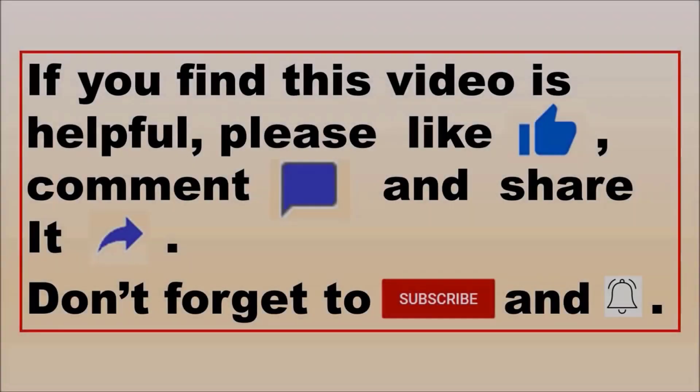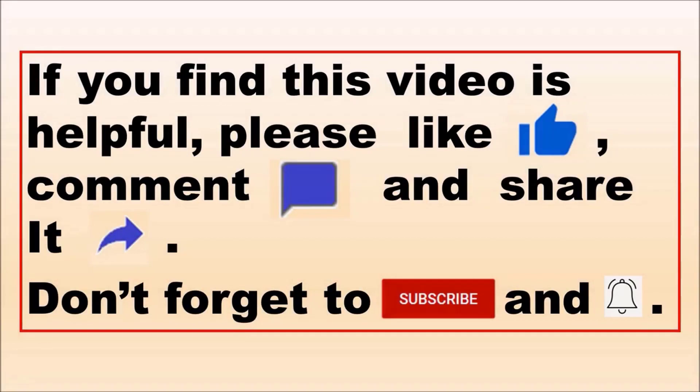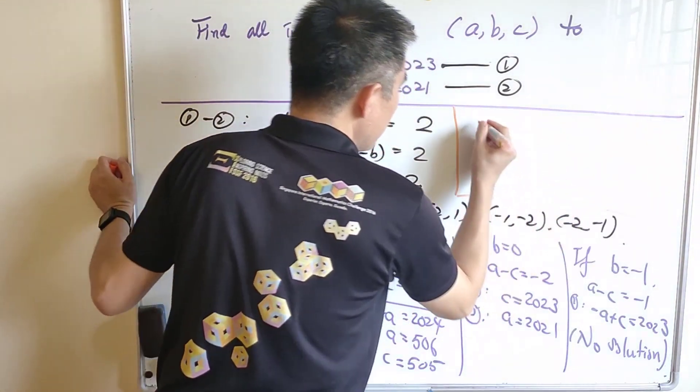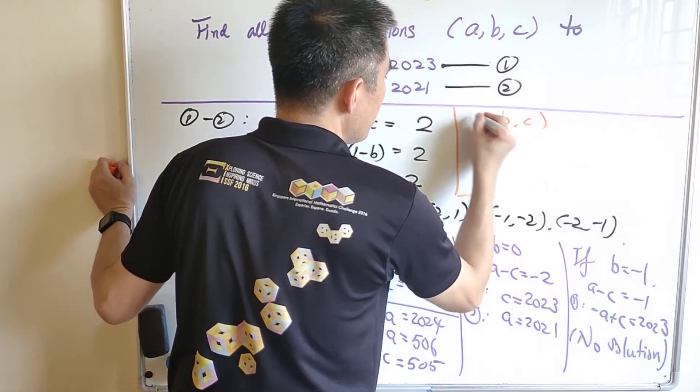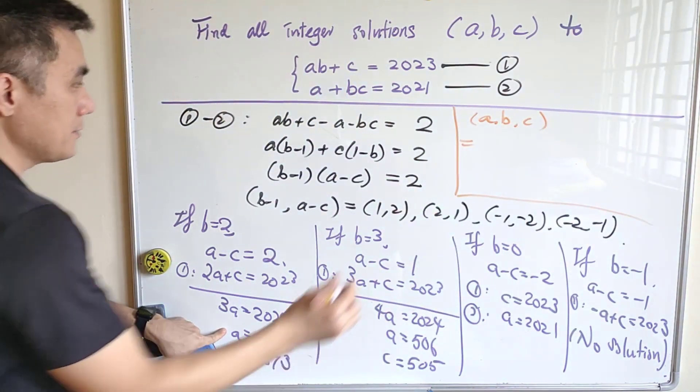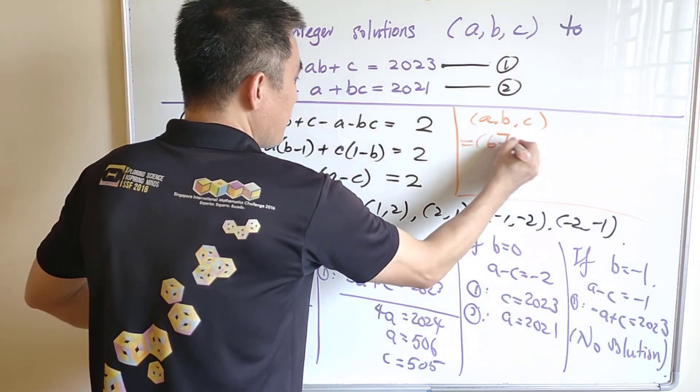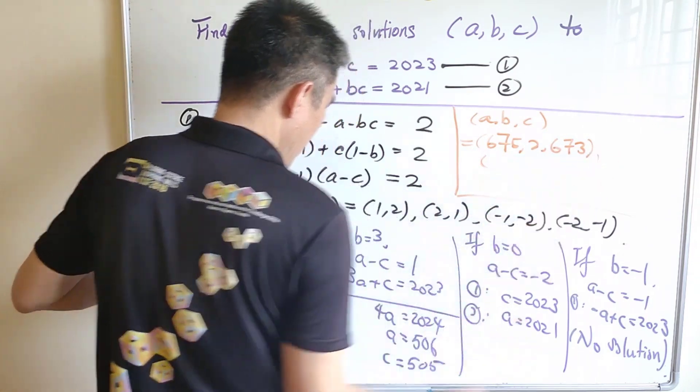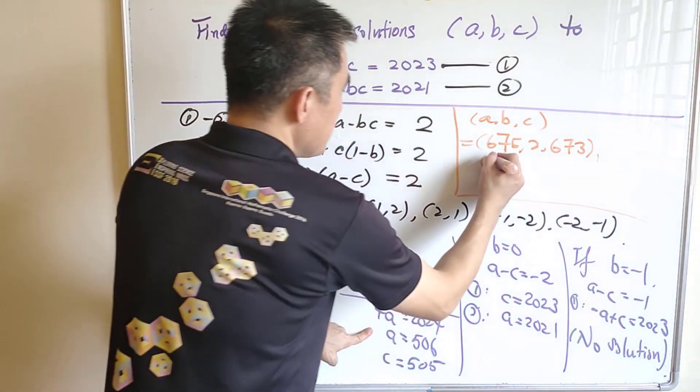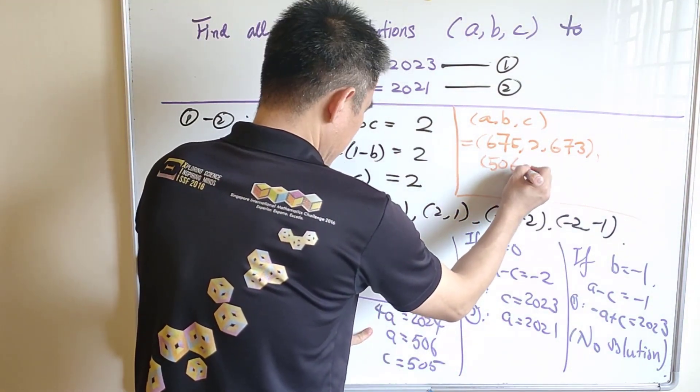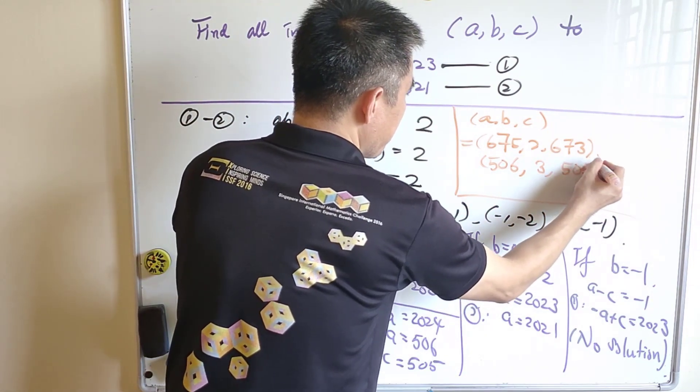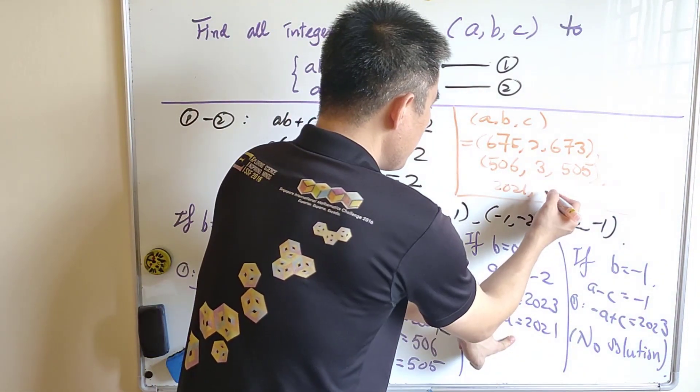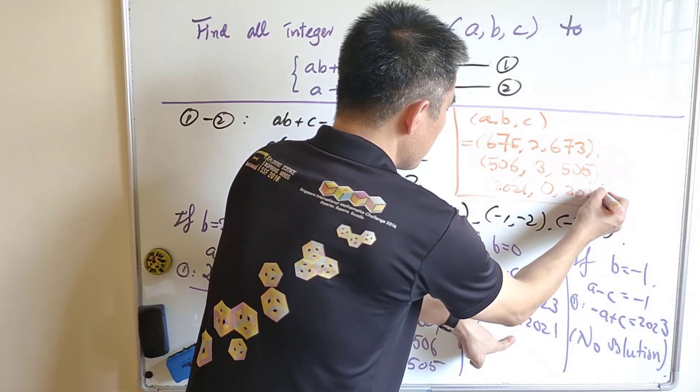If you enjoy this video, please like, comment, and subscribe. So to conclude, let us list all the solutions here. A, B, C as 675, 2, 673 or 506, 3, and 505. And the last one, 2021, 0 and 2023.